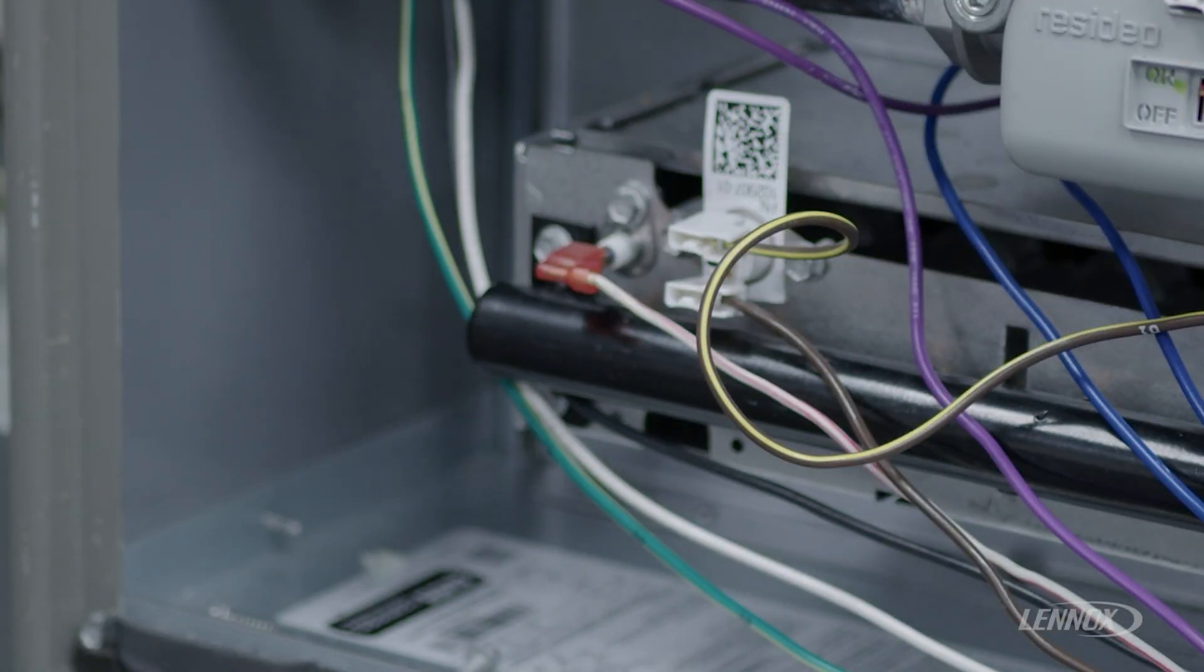Typically, a flame sensor is mounted on the last burner or the end of the burner. We want to be careful not to confuse that with the igniter, which is typically mounted on the first burner or beginning of the gas manifold.